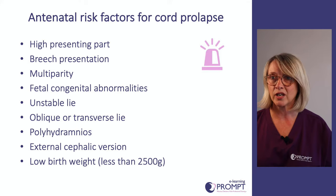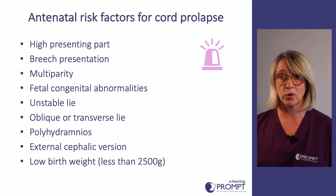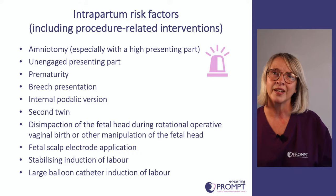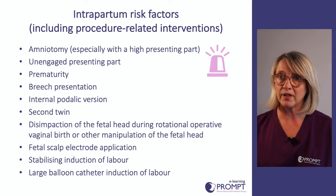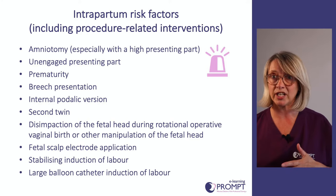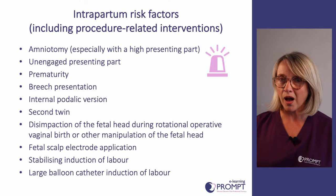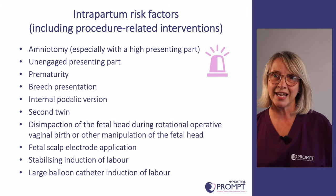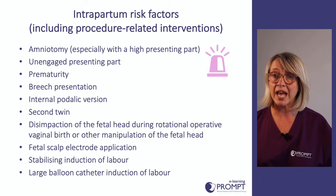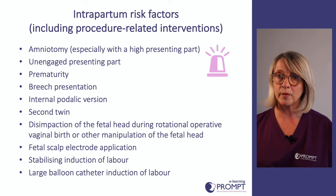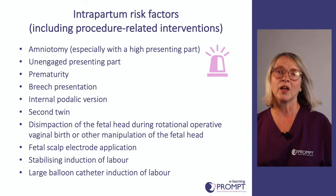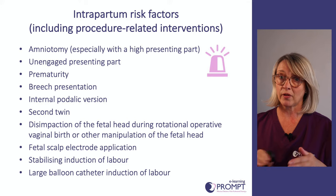Cord prolapse most commonly occurs after the amniotic membranes rupture spontaneously or artificially and the fetal presenting part is poorly applied to the maternal cervix. Intrapartum risk factors including procedure-related interventions include: amniotomy especially when the presenting part is high, an unengaged presenting part, prematurity, breech presentation, internal podalic version, the second twin, disimpaction of the fetal head during rotational operative vaginal birth or other manipulation, application of a fetal scalp electrode, stabilising induction of labour, and large balloon catheter induction.